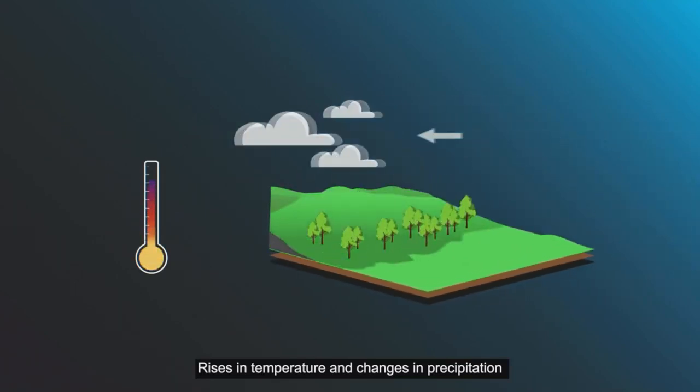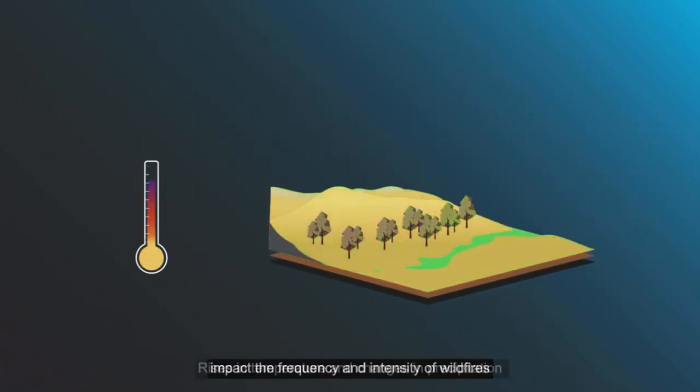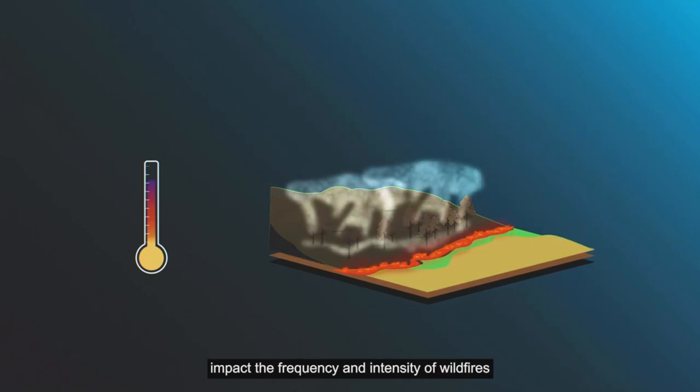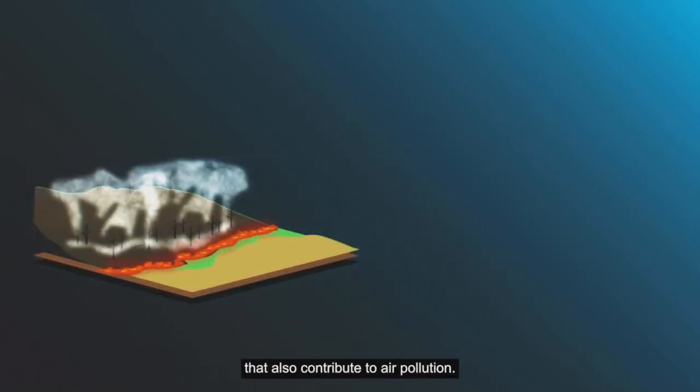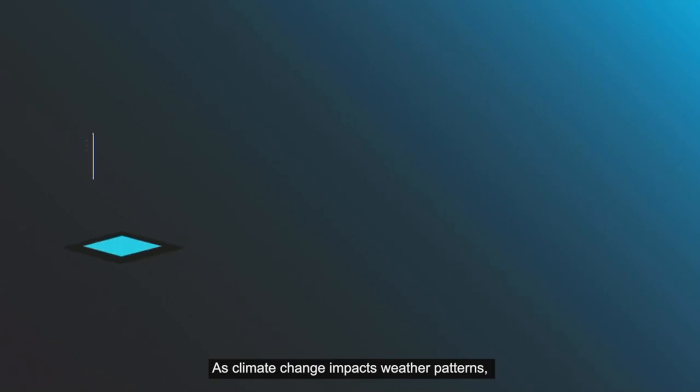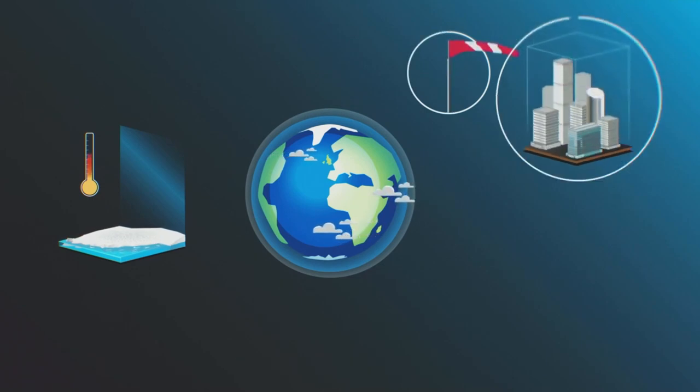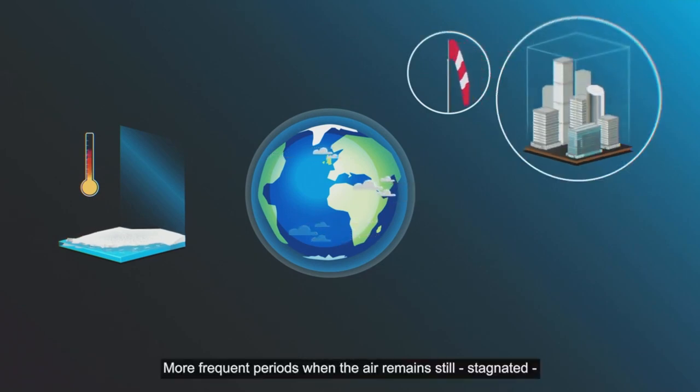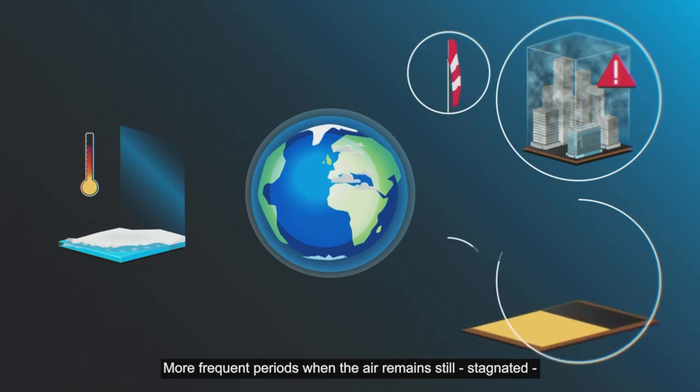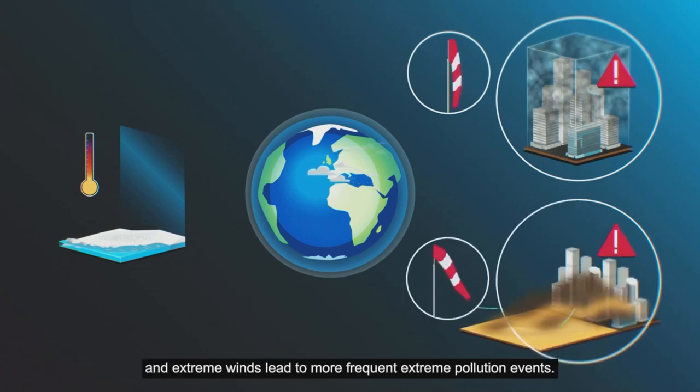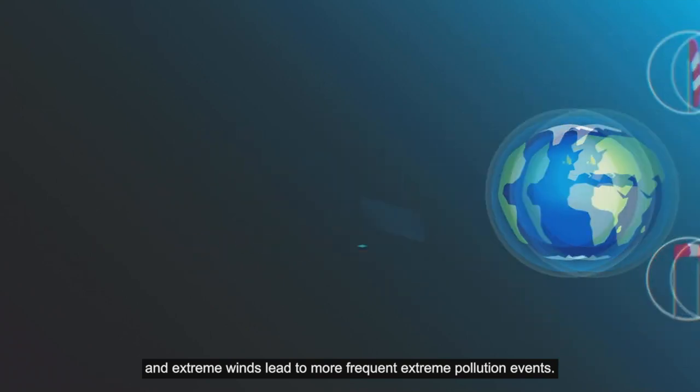Rises in temperature and changes in precipitation impact the frequency and intensity of wildfires that also contribute to air pollution. As climate change impacts weather patterns, it leads to changes in air circulation. More frequent periods where the air remains still, stagnated and extreme winds lead to more frequent extreme pollution events.